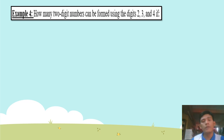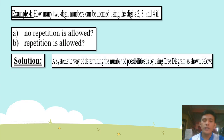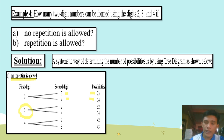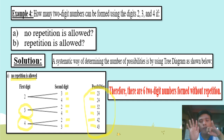How many two-digit numbers can be formed using the digits 2, 3, and 4? For A, no repetition is allowed; for B, repetition is allowed. Using a tree diagram: for no repetition, starting with 2 we get 23 and 24; starting with 3 we get 32 and 34; starting with 4 we get 42 and 43. Therefore, there are six two-digit numbers formed without repetition.